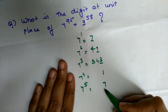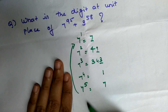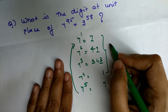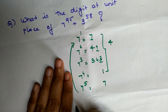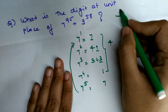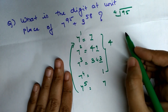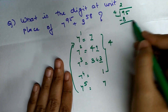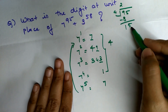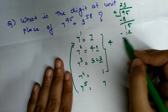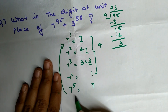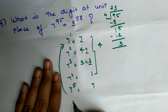Since the units digits repeat with a cycle of four, we divide the exponent 95 by four. 95 ÷ 4 gives a remainder of 3. So the units place of 7^95 is the same as the units place of 7^3, which is 3. Now let's find the cycle for powers of three: 3^1 = 3, 3^2 = 9, 3^3 = 27.